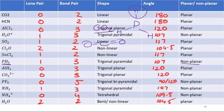So this is non-planar. If you look at PF5 — P bonded to five F atoms — this is non-planar because there are bonds extending in multiple directions in three-dimensional space.